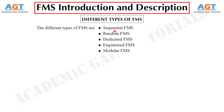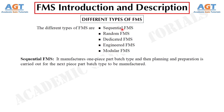Let's start with sequential FMS. This flexible manufacturing system manufactures one piece part batch type, and then planning and preparation is carried out for the next piece part batch type to be manufactured. It operates like a small batch flexible transfer line.